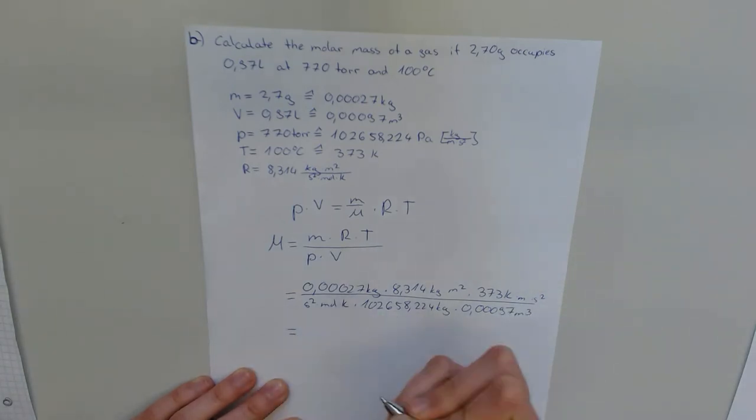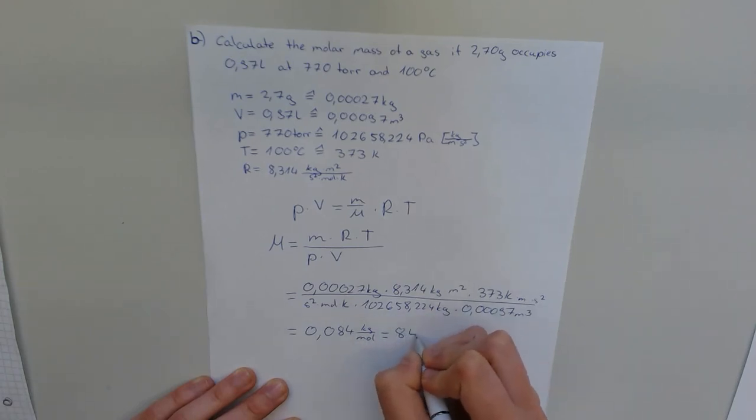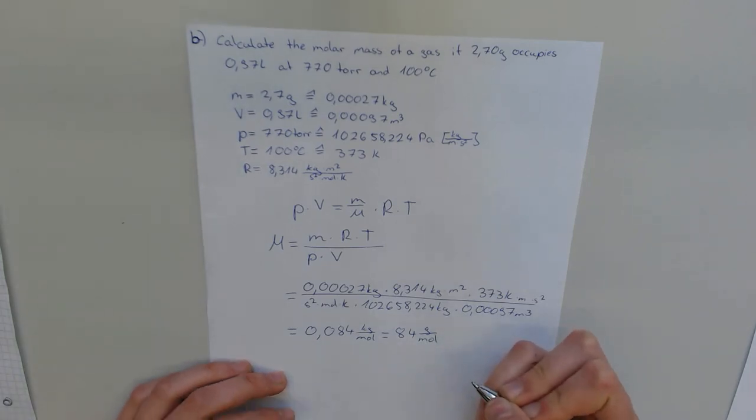And then we get a molar mass of 0.084 kilogram per mole, which is 84 gram per mole. Thanks for listening.